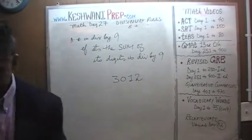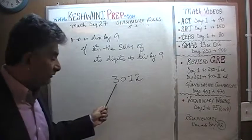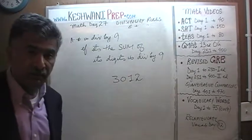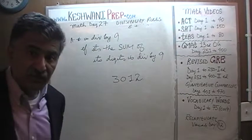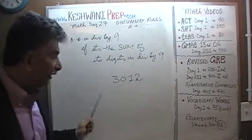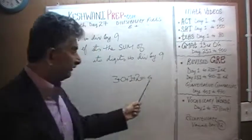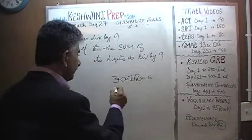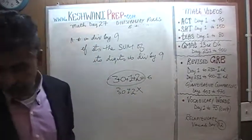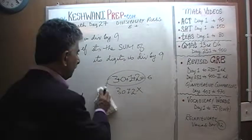Is 3,012 divisible by 9? We can tell it's divisible by 3 because 3 is divisible by 3 and 1 plus 2 is 3. But it's not going to be divisible by 9. The sum of the digits is 3 plus 0 plus 1 plus 2 equals 6, and 6 is not divisible by 9. So 3,012 is divisible by 3 but not by 9.